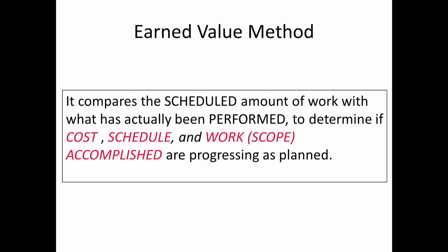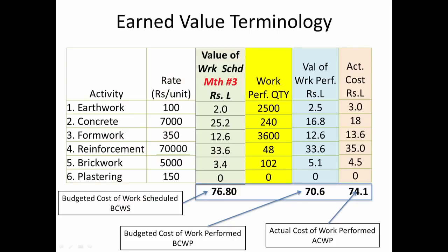Going back to our example: we have reviewed the terminology and can see BCWP, BCWS, and ACWP. We said we should have been at 76.8 but we are only at 70.6 as far as schedule goes — so we are behind schedule. And although we spent 74.1, we only got 70.6 worth of work, so we are over budget.